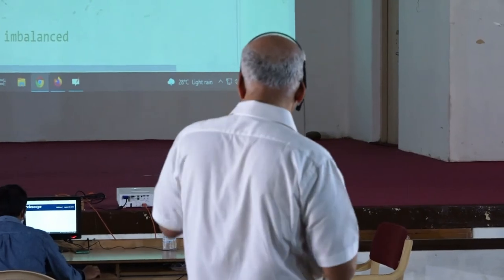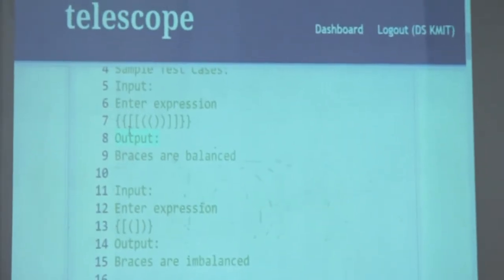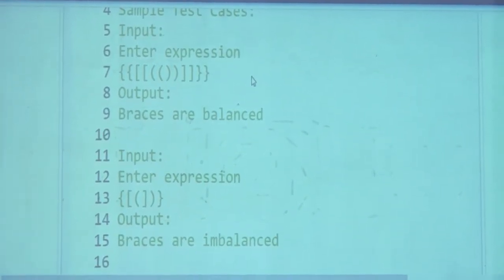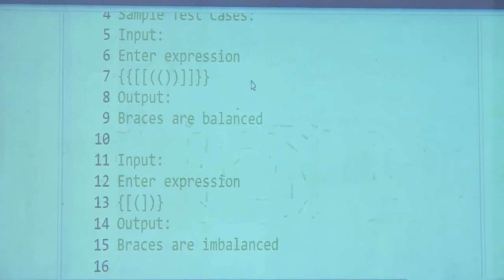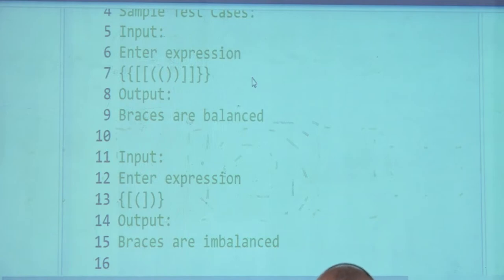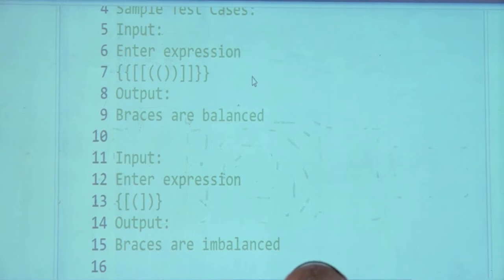Look at that expression. It starts with two flower brackets. When do you say brackets are balanced? For every closing brace there is a corresponding opening brace. You can't close a bracket which has never been opened — first you open a bracket and then you close it. That is a legitimate closure.